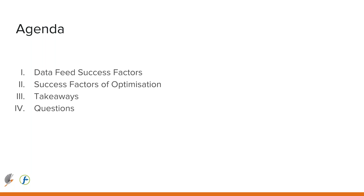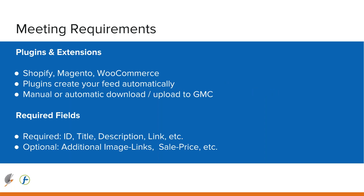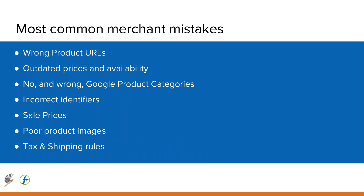Getting started with data feed success factors — how do we optimize our Google Shopping campaigns starting at our data feed? The first thing we've got to do is meet the requirements and be able to submit to Google Shopping without getting disapproved. That means you typically need some kind of tool between your shop and Google Shopping, something that integrates with your shopping cart. You want to make sure you have all the required fields that Google wants, like ID, title, and description.